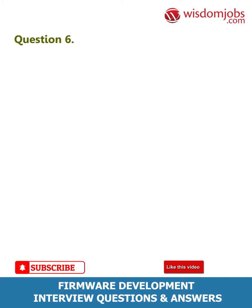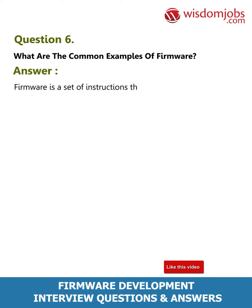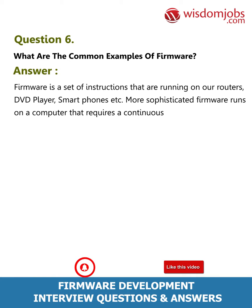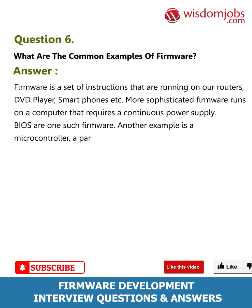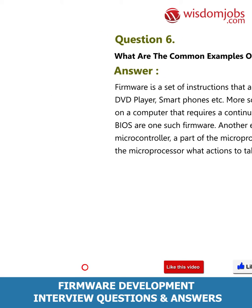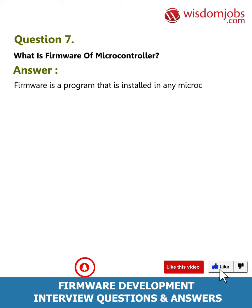Question 6: What are the common examples of firmware? Firmware is a set of instructions that are running on our routers, DVD players, smartphones, etc. More sophisticated firmware runs on a computer that requires a continuous power supply. BIOS is one such firmware. Another example is a microcontroller, a part of the microprocessor that instructs the microprocessor what actions to take.